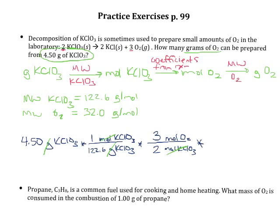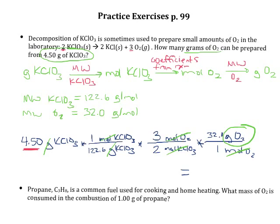Our last step is to convert moles of oxygen into grams of oxygen. Using the molar mass of 32.0 grams per mole, our units cancel and leave us with grams of oxygen, which is what we want. Rounding to three significant figures — matching the significant figures in our starting value — you should get 1.76 grams of O₂. So if I start with 4.5 grams of KClO₃, I will produce 1.76 grams of O₂.